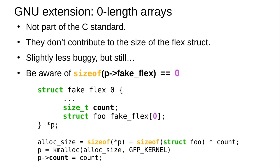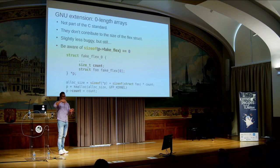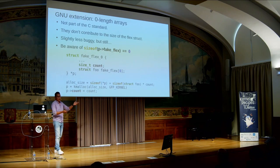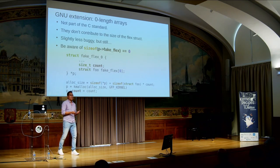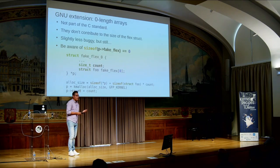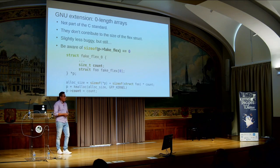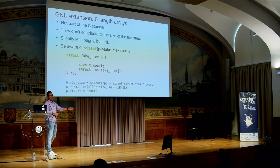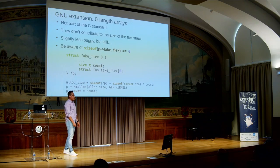Now let's move on to zero-length arrays. The problem with those arrays is that they are not part of the language — they were included as an extension, sort of as a remediation for the lack of a proper way to declare variable-length objects. They are slightly less problematic, but I've found cases in the kernel code where people apply the sizeof operator to the array. This operation is going to result in zero, and they were using this result to calculate other things — that's usually a bug.